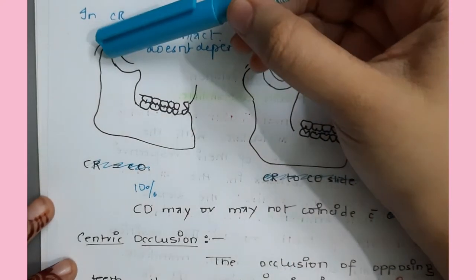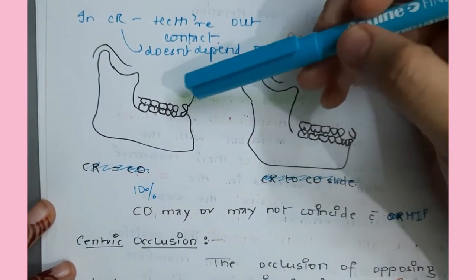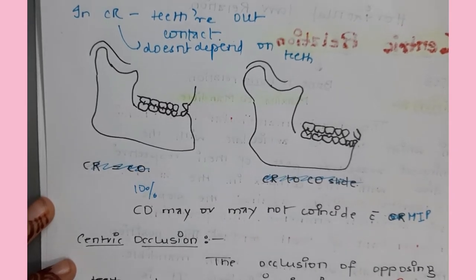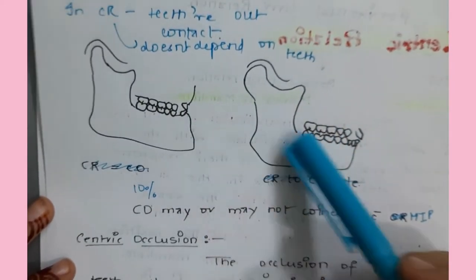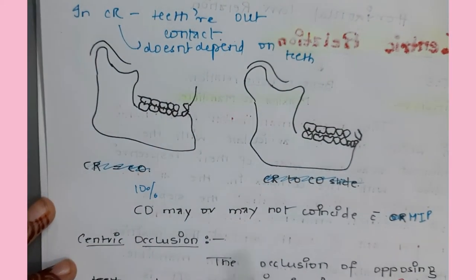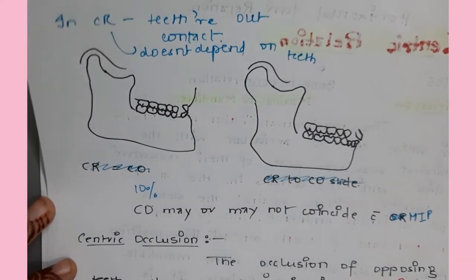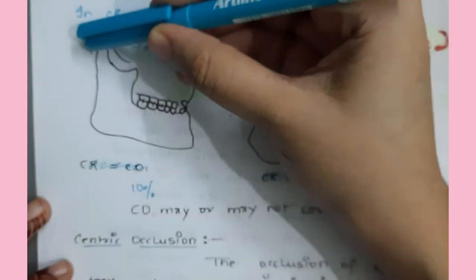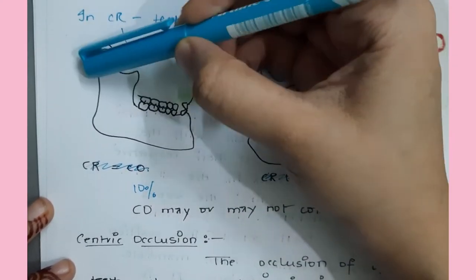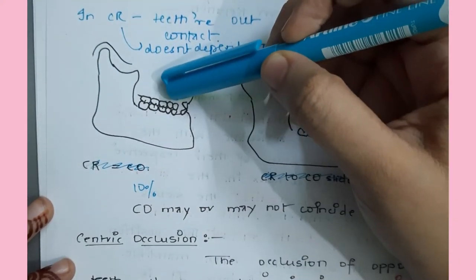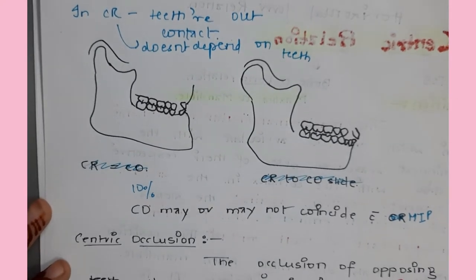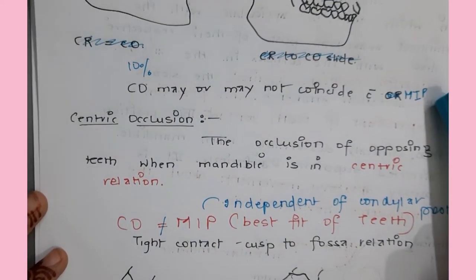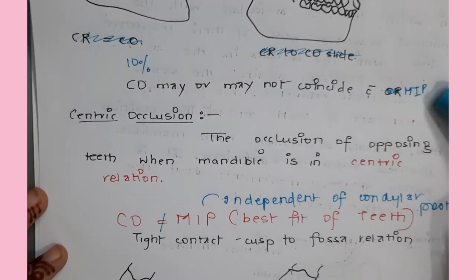Whenever we have centric relation of the condyle, we have centric occlusion. Keep in mind: centric occlusion and maximum intercuspation are two different things. We have centric occlusion when we have centric relation, whereas maximum intercuspation is not dependent on condyle position. Centric occlusion and maximum intercuspation are not the same thing - centric occlusion may or may not coincide with maximum intercuspation. Maximum intercuspation is independent of condyle relationship.